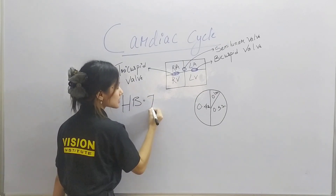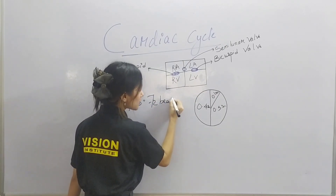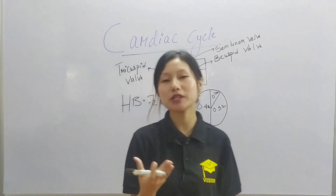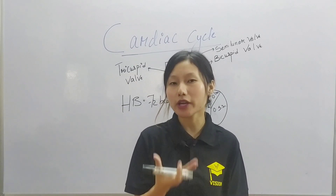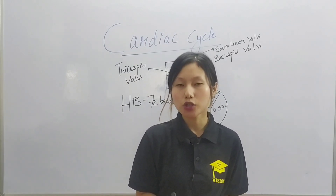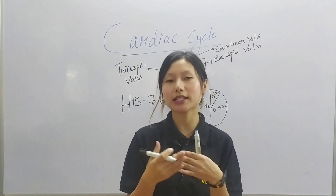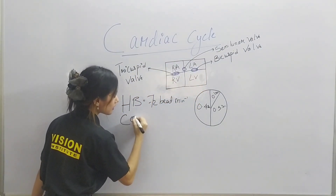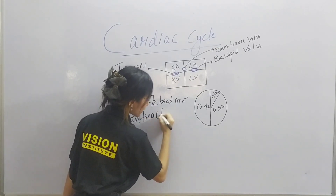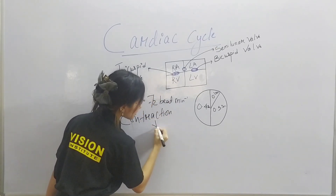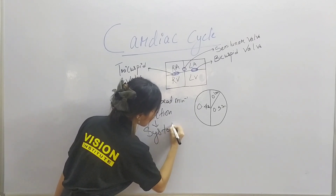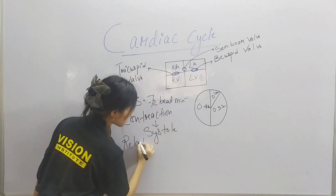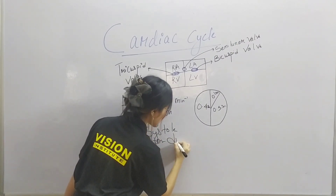Our heart beats about 72 times per minute. The cardiac cycle is a pattern of contraction and relaxation. Contraction here means systole and relaxation means diastole.